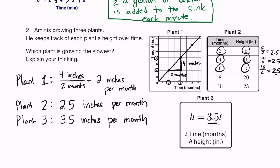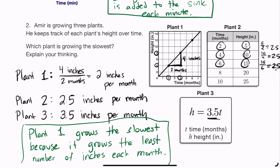The question asks which plant is growing the slowest — that is plant 1. Plant 1 grows only 2 inches per month, while plant 2 grows 2.5 and plant 3 grows 3.5 inches per month. Plant 1 grows the slowest because it grows the least number of inches each month.